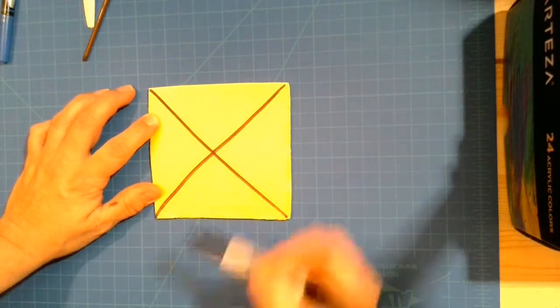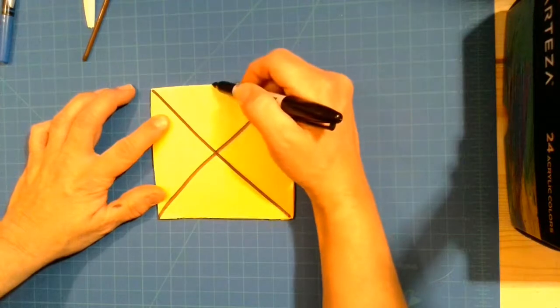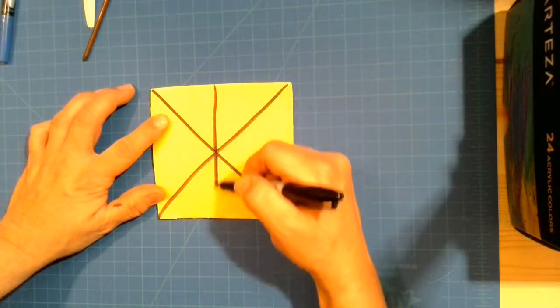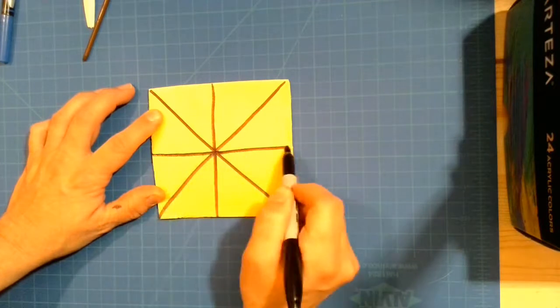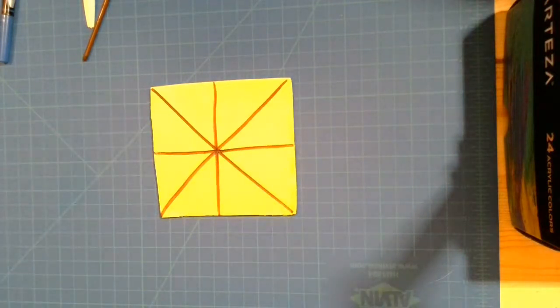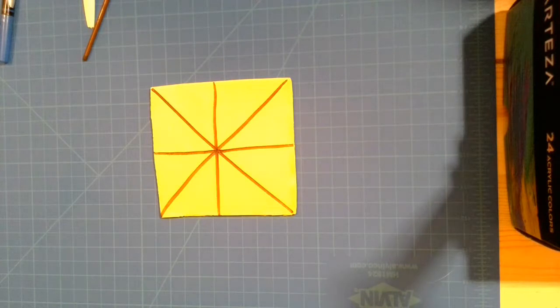Just like that. Then we're going to come down the center of our square and across the middle of our square. Just like that. That's what we're going to use to make our spiderweb frame.